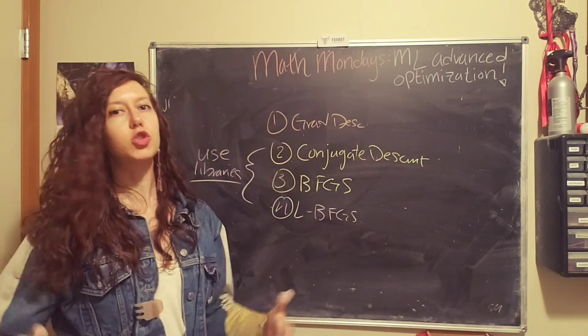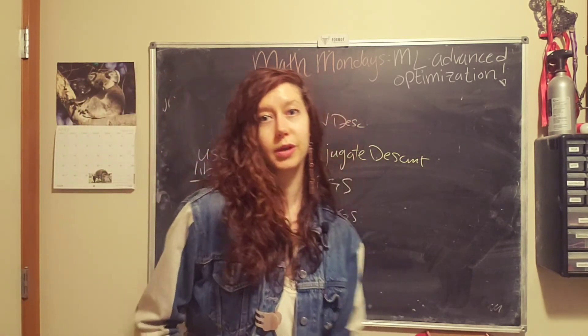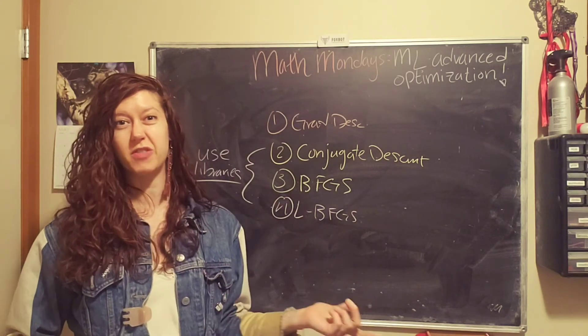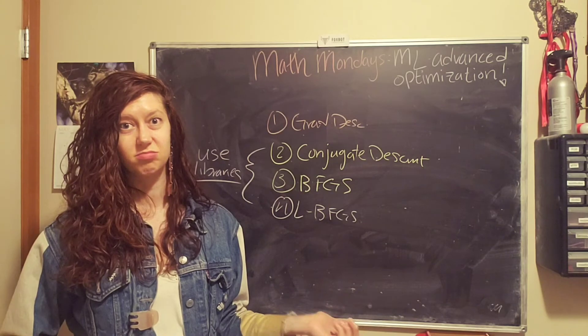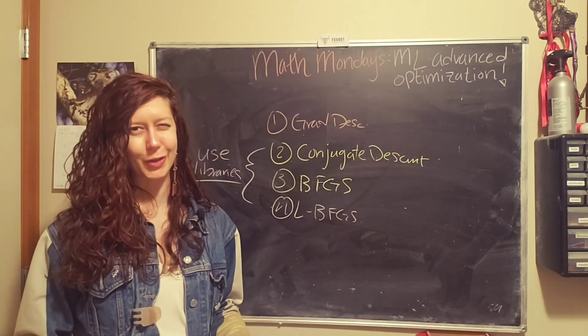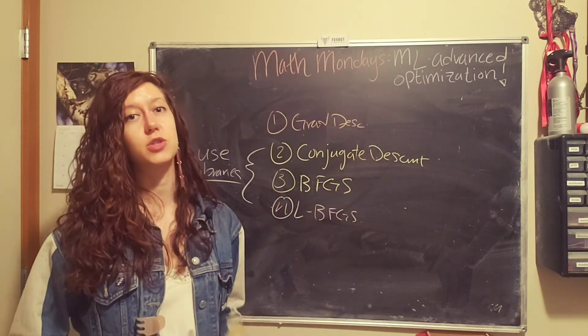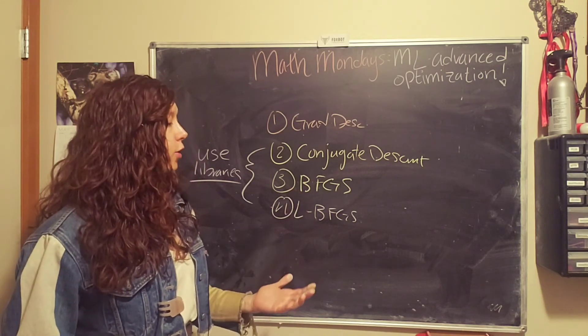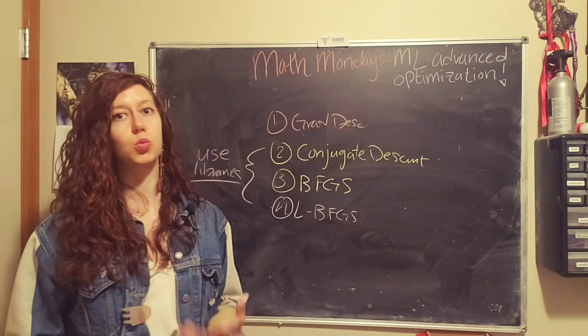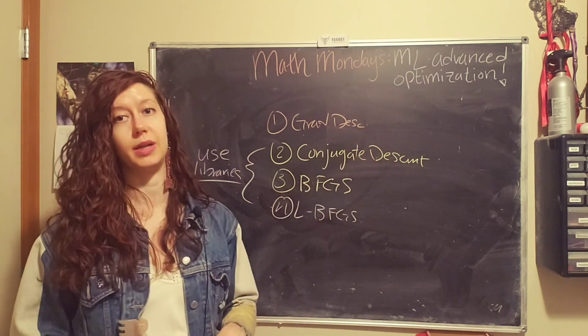So these three are much more sophisticated than gradient descent. Why would we want to use those? Well, number one, we don't have to manually pick a learning rate, kind of guess and check there. So that reduces the amount of guesswork that you have to do. And these three are also often faster than gradient descent, but on the other hand, they're also more complex. And so if you have an application where it's really important for you to know everything that your code is doing, you want to go with gradient descent.